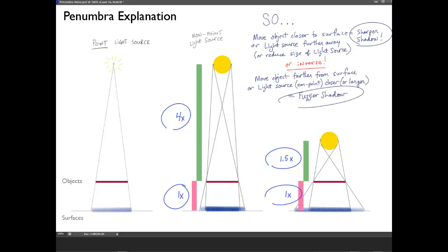The inverse is also true. If we move an object further from the surface, or the light source closer, or we make the light source larger, we're going to end up with a fuzzier shadow.